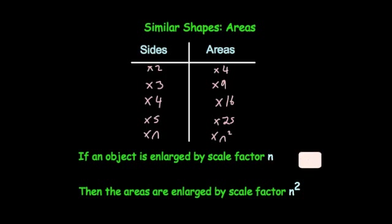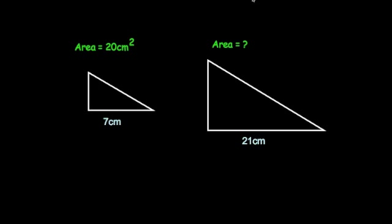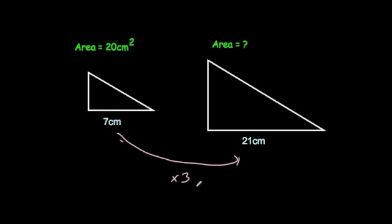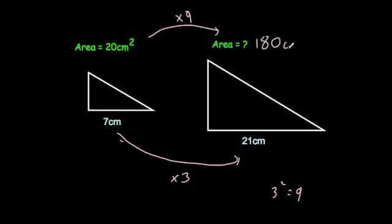Let's have a look at some questions. We've got two right-angled triangles, and we've been told the area of the one on the left is 20 centimetres squared and the base is 7 centimetres. The base of the one on the right is 21 centimetres, and we want to find the area. To get from 7 to 21 you multiply by 3, so the scale factor of enlargement is 3. 3 squared is 9, so the areas would be 9 times bigger. 9 times 20 gives us 180 centimetres squared.